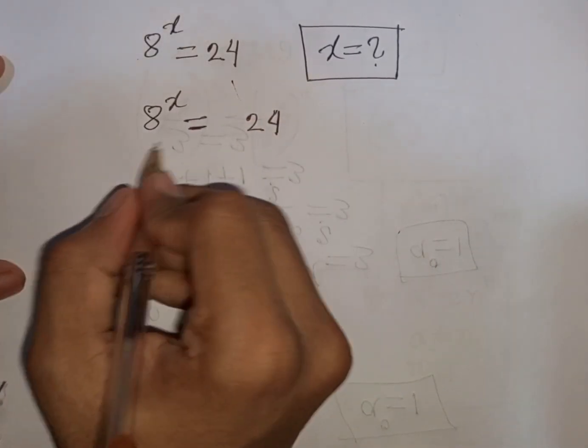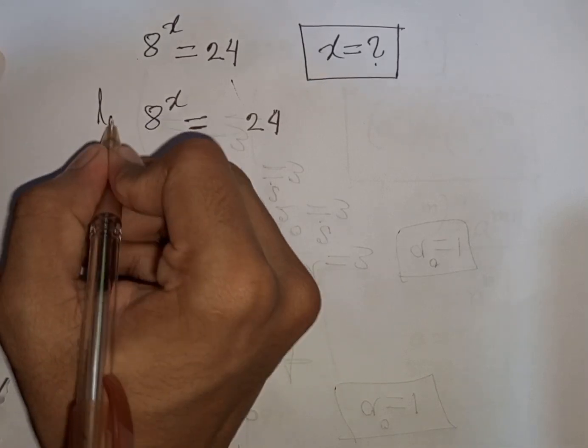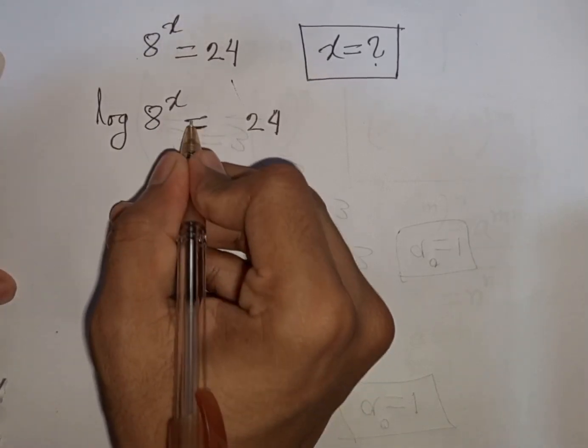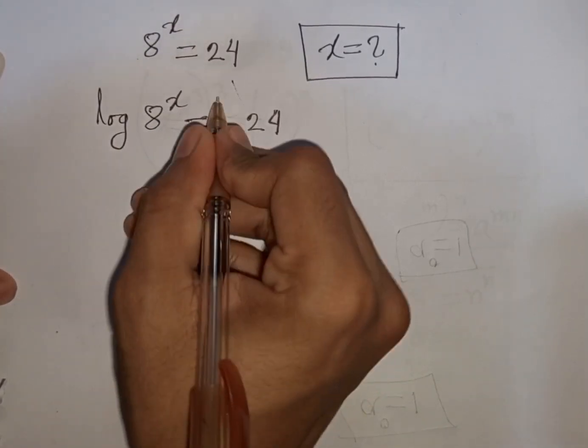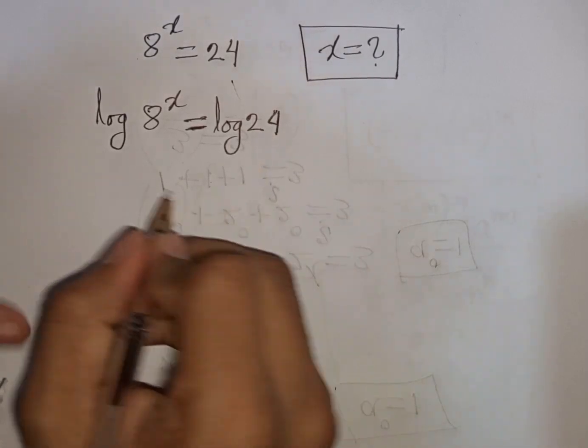Now we take log in both sides. So we can write here log of 8 power x is equal to log of 24.